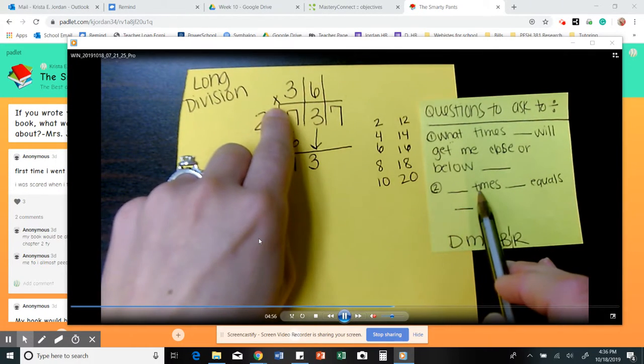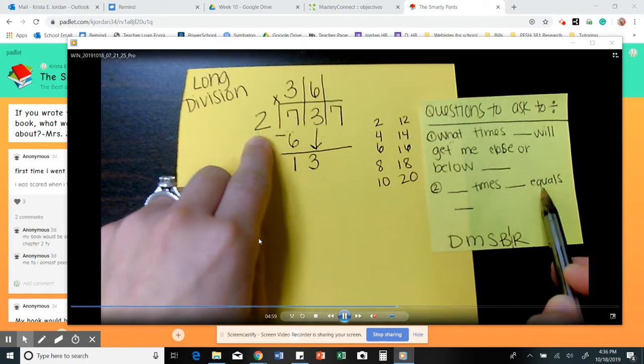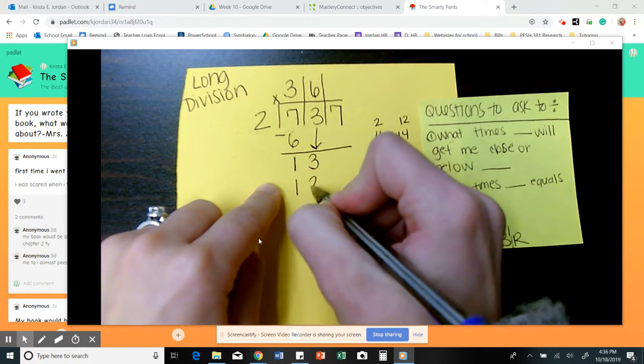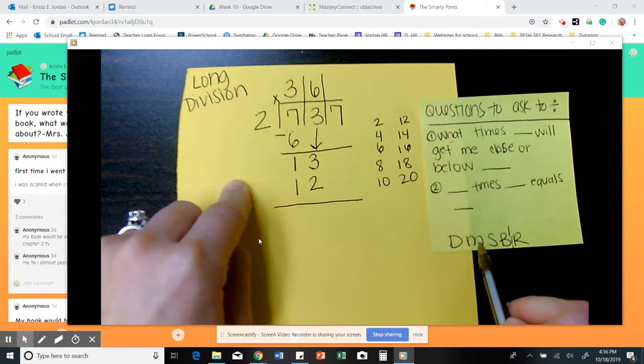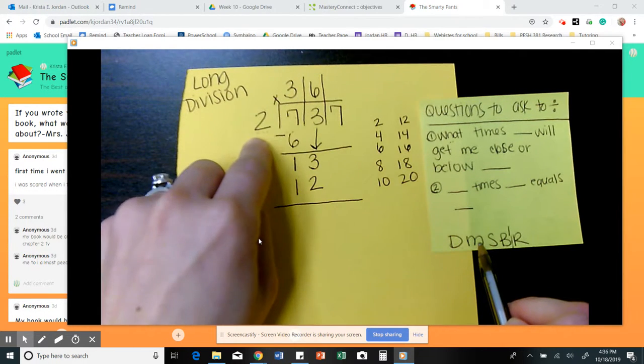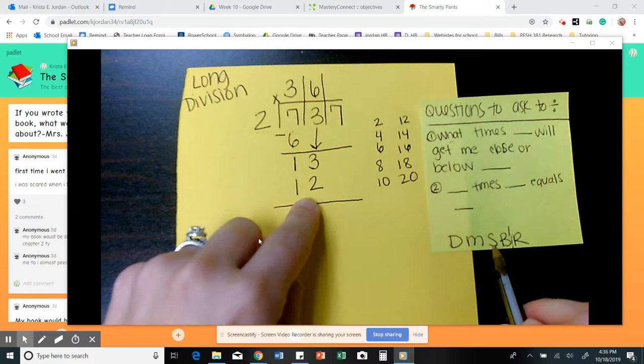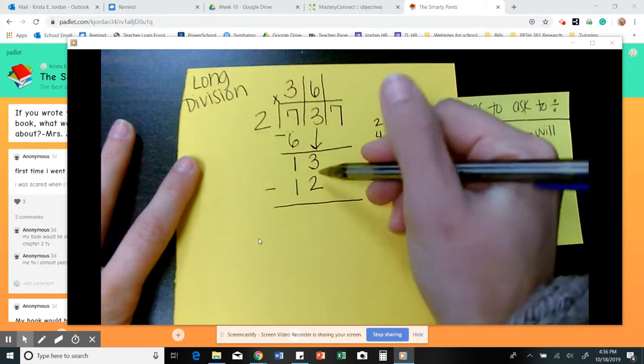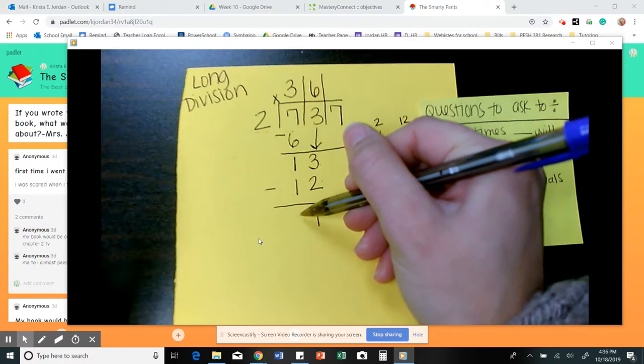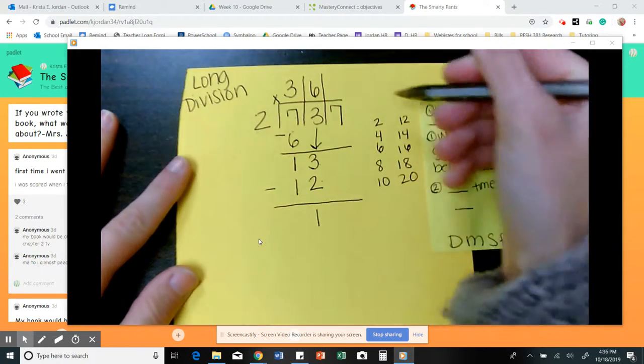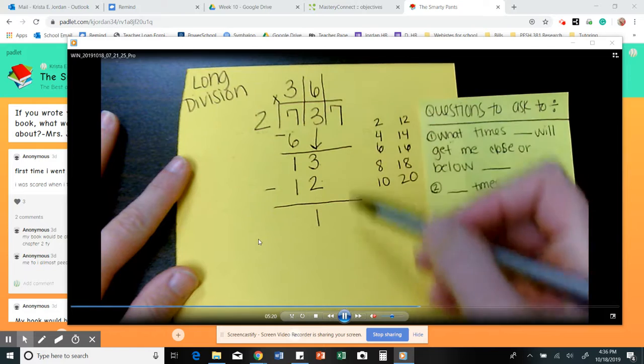So you ask yourself the second question. 6 times 2 equals what? And that's the number that you want to put under 13 so that you can subtract them. So dad's always working. Mom just multiplied 6 times 2. And we got 12. Now a sister. So she's going to subtract. 3 take away 2 is 1. And I know 1 minus 1 is 0. You know that 0 is a placeholder. It's not necessary. But if you want to put it there, go right ahead.